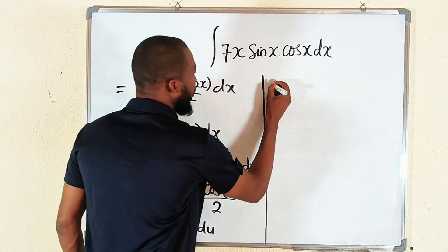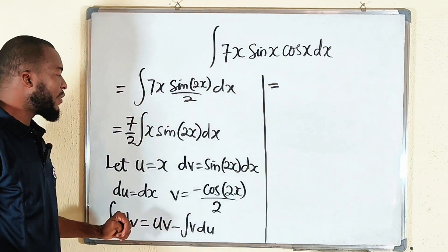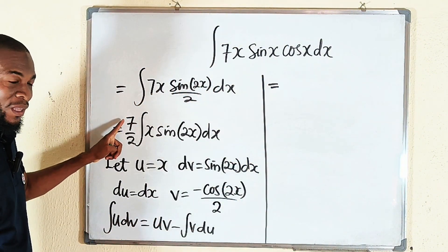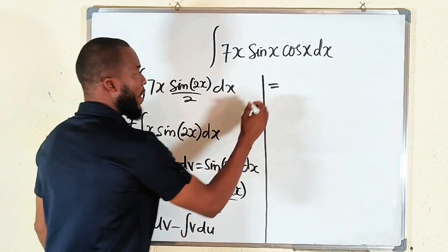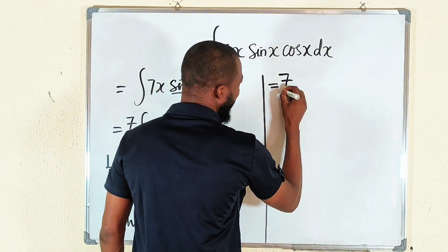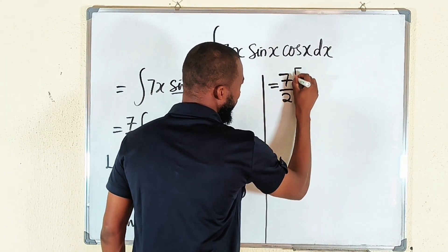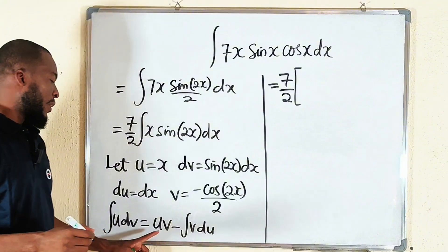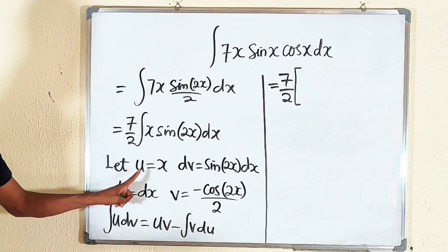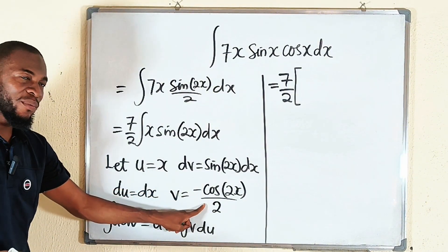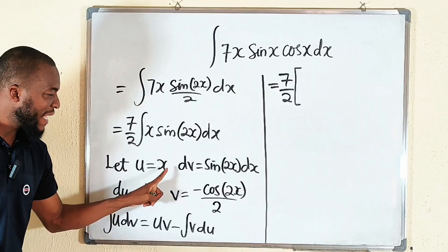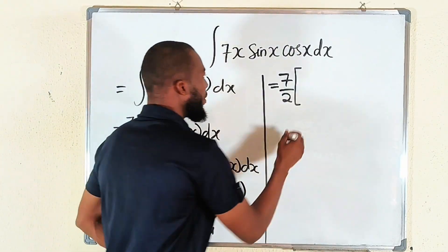So this is equal to, what is u v? But don't forget you have 7 over 2 outside waiting to multiply the result. u v means x times this. It is going to be negative x cos 2x divided by 2.